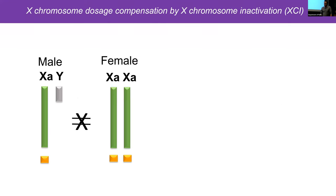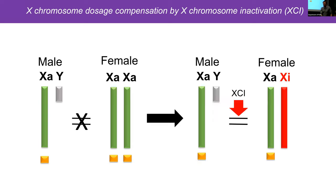Sex chromosome dosage is not equal between males and females. To correct for this imbalance, one X is randomly chosen and largely transcriptionally inactivated through the process of X inactivation. This occurs very early in differentiation and development in females.